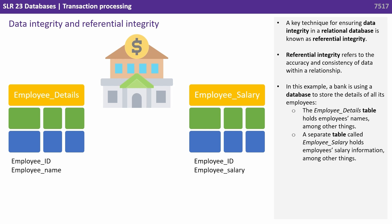In this example, a bank is using a database to store the details of all its employees. The employee details table holds their name, among other things. A totally separate table called employee salary holds employees' salary information, among other things.